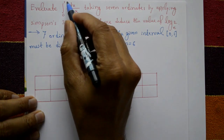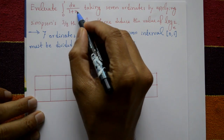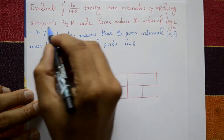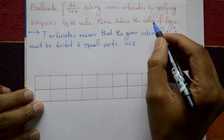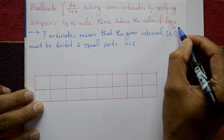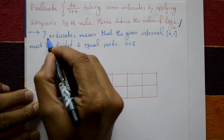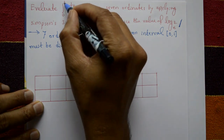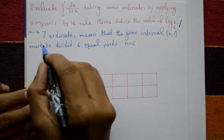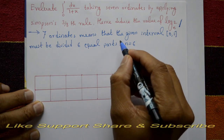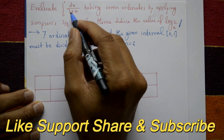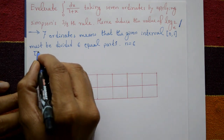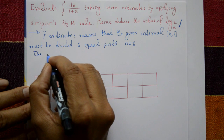Evaluate the integration of 0 to 1, of 1 upon (1+x) with respect to x, taking 7 ordinates by applying Simpson's 3/8 rule, hence deduce the value of log 2 to the base e. Now, 7 ordinates means the given interval 0 to 1 must be divided into 6 equal parts. 6 equal parts means 7 ordinates, so n is equal to 6.